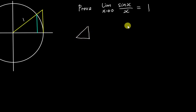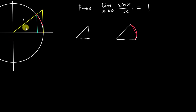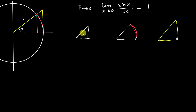Let me sketch out the small right angle triangle, then we have a sector in the middle — this is the arc length of the sector — and then we have a big triangle. At least you should know both smaller and larger shapes are right angle triangles, and the angle between them will be x. So we have angle x here, angle x here, and angle x here.